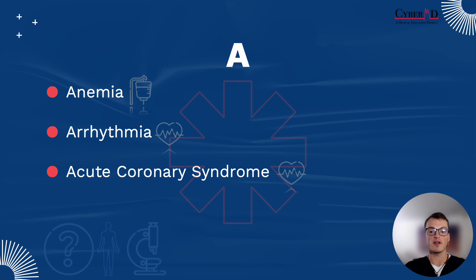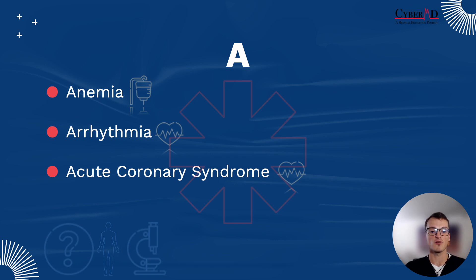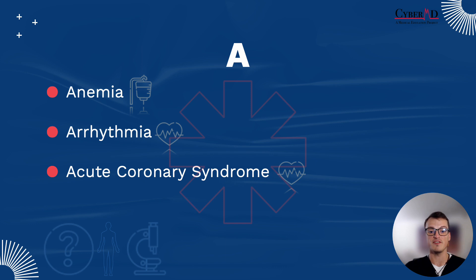For arrhythmia and acute coronary syndrome, ask about personal and family history of heart disease, and associated risk factors such as hypertension, diabetes, smoking, alcohol use, and illicit drug use — especially cocaine. On physical exam, look for conjunctival pallor or other signs of anemia. Listen to heart sounds and palpate the pulse to check for irregular rhythm, atrial fibrillation, or new murmurs such as a loud blowing holosystolic murmur not previously charted.